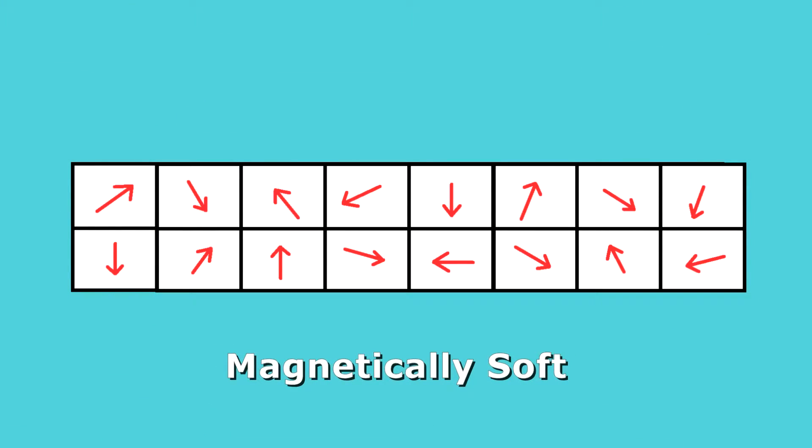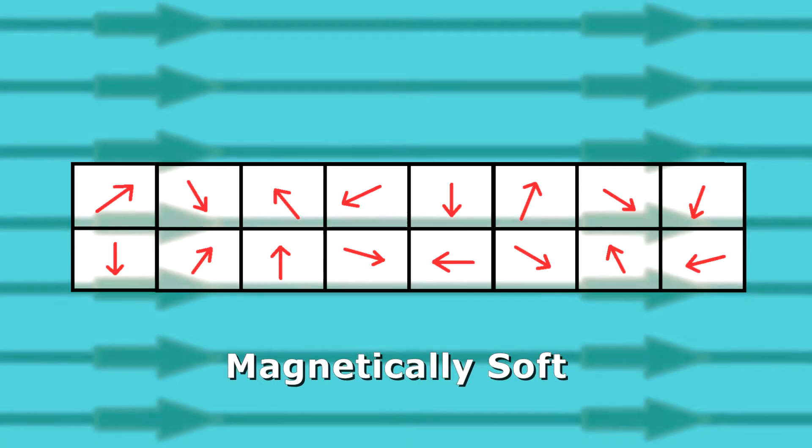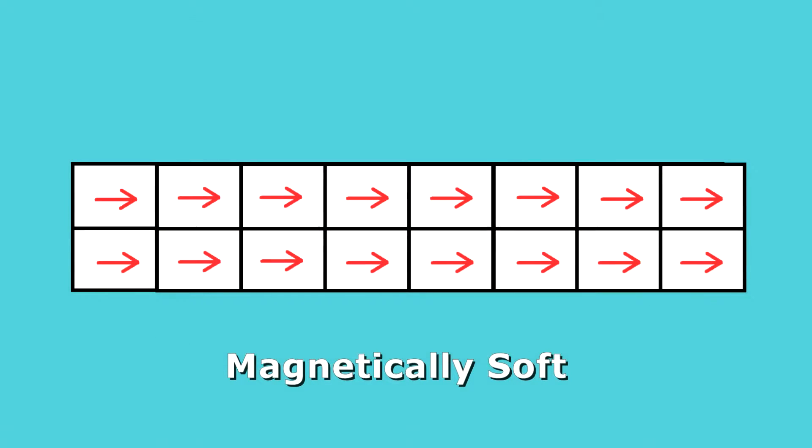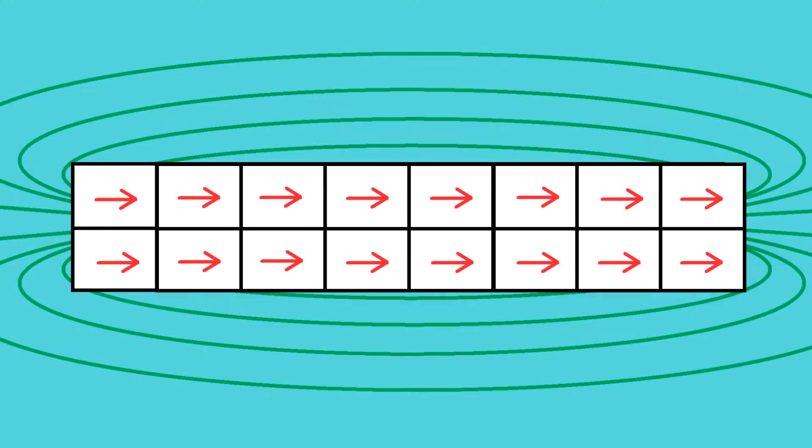But now let's say that we have something that's magnetically soft. If we do the same thing when we apply a magnetic field, all those electron spins are going to line up with that magnetic field. When these spins are all aligned, you now have a material that is magnetized. And it has its own magnetic field now, too.